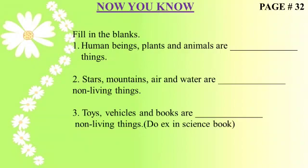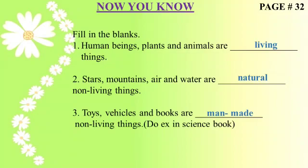Now students, come to page number 32 — Now You Know. Fill in the blanks. Number 1: Human beings, plants and animals are living things. Number 2: Stars, mountains, air and water are natural non-living things. Number 3: Vehicles and books are man-made non-living things. Do exercise in science book.